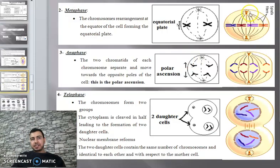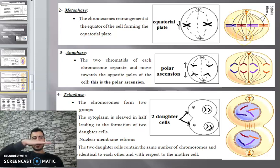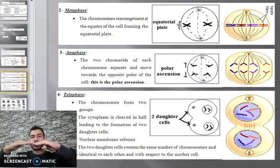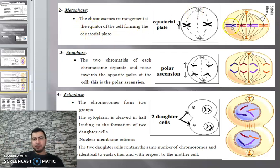The next phase is metaphase. Each spindle fiber extends from the aster at each pole to a chromosome at the center. All the chromosomes are arranged in the middle of the cell at a region called the equatorial plate — the center of the cell.